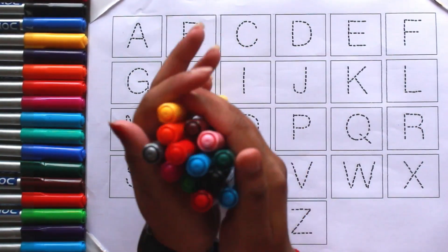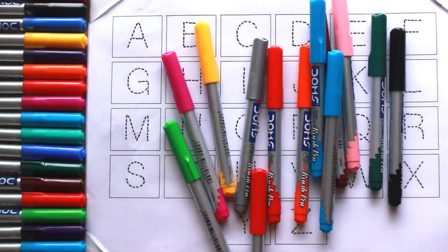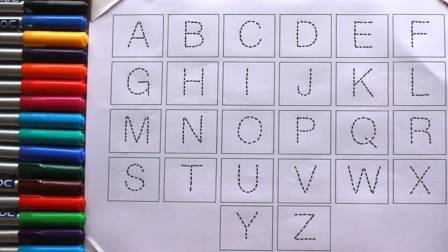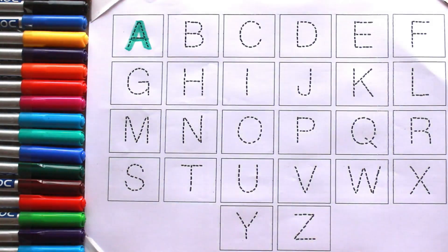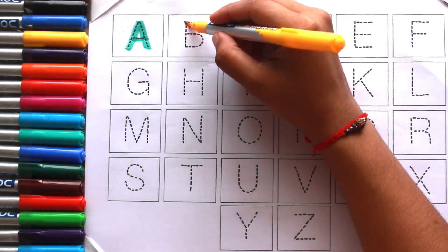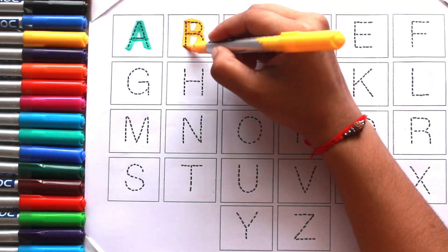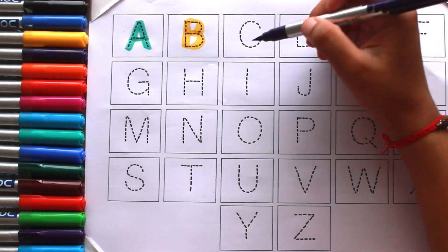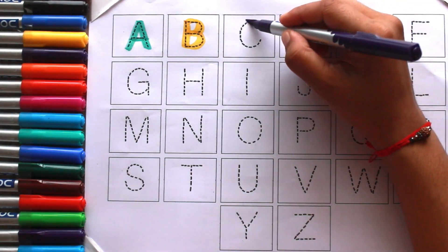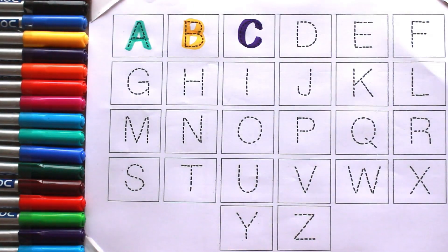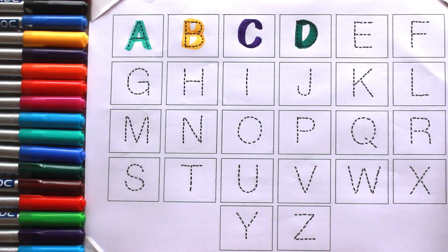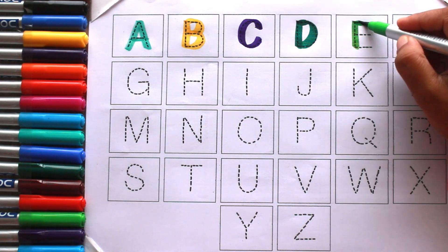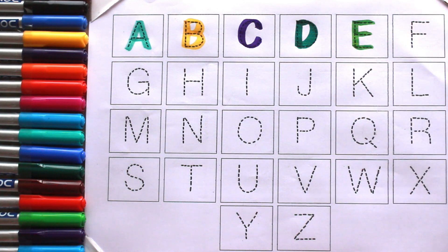Let's start with Colors. Mint Color A, Yellow Color B, Violet Color C, Green Color D, Light Green Color E.